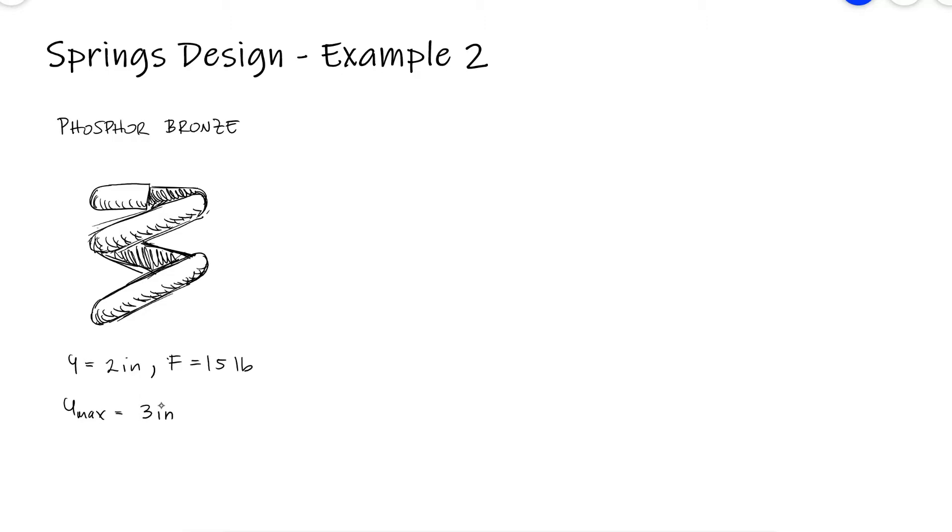Determine the smallest diameter wire and specify the inside and outside diameters of the coil, the spring rate, the total number of coils, the free length of the spring, and the final factor of safety.